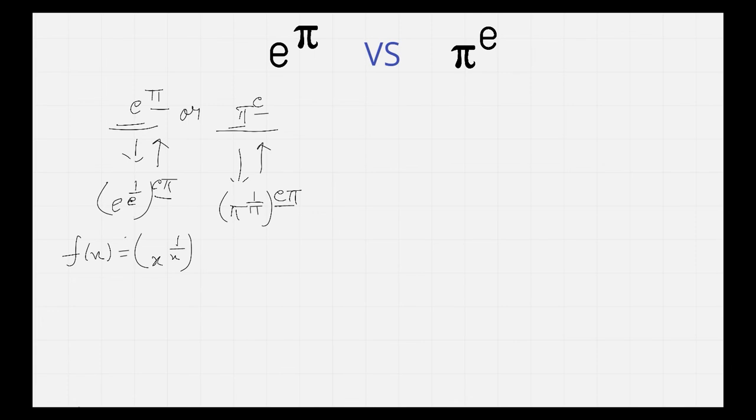Then we need to find which of these is greater. Since this is a positive power it would be an increasing function, so whichever is greater in this case, either π raised to power 1/π or e raised to power 1/e, that would be greater overall.